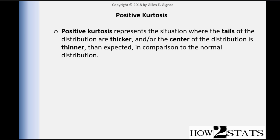Let's look at positive kurtosis. It's the representation of the situation where the tails of the distribution are thicker and/or the center of the distribution is thinner than expected, in comparison to the normal distribution. You just have to think of a normal distribution as being symmetric. A skew of zero is the property of a perfectly normal distribution, and another property of the normal distribution is that the kurtosis is zero as well. Positive kurtosis is when the tails are thicker or the center is thinner.